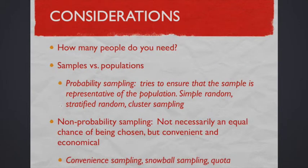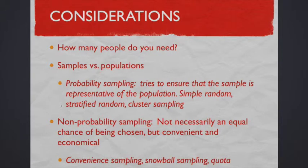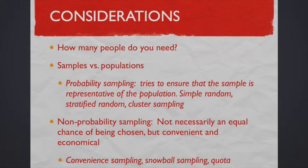Let's say we're going to do a survey — we're going to send this out to people. How many people do you need? If you work in an organization with 10,000 people, that's a lot of people to get to take your survey. So we have to think about samples versus populations. Sometimes it's not possible to ask an entire population. Probability sampling — when we take a sample — gives us hopefully a representative sample of that population. This tries to ensure the sample we choose is representative. Examples include random sampling, stratified sampling, and cluster sampling.